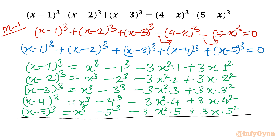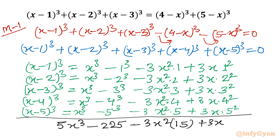If I simply add the LHS, the x³ term appears 5 times, giving 5x³. For the constant cubes: 1³+2³+3³+4³+5³ = 1+8+27+64+125 = 225. For the x² coefficient: the sum 1+2+3+4+5 = 15, so we get −3x²·15 = −45x². For the x coefficient: 1²+2²+3²+4²+5² = 1+4+9+16+25 = 55, giving +3x·55 = +165x.